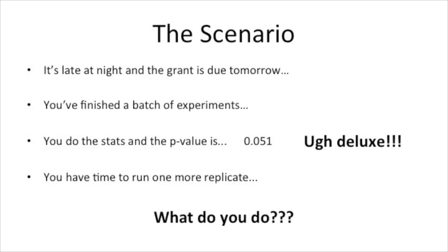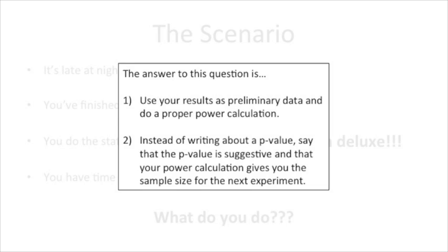Back to our scenario: it's late at night and the grant is due tomorrow. You finished a batch of experiments. You do the stats and the p-value is 0.051. You have time to run one more replicate — what do you do? The answer is: use your results as preliminary data and do a proper power calculation. Instead of writing about a p-value, say that the p-value is suggestive and that your power calculation gives you the sample size for the next experiment. Tune in next time for a stat quest on false discovery rates and p-values, and how they're related and what they mean.